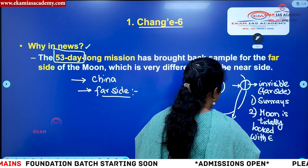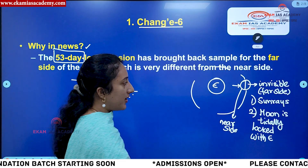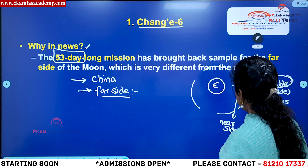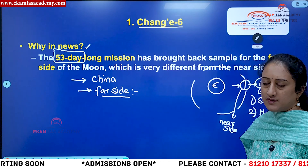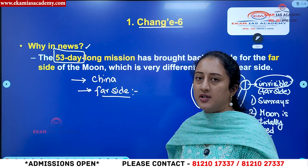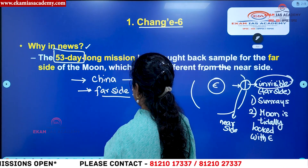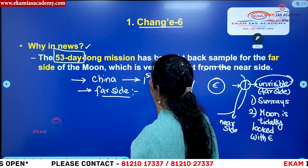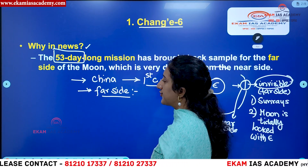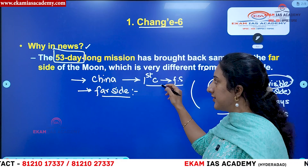In the Chang'e 6 mission, China collected materials from the invisible part — the far side of the moon — and sent them back to the earth. With this, China became the very first country to conduct an experiment on the far side of the moon.